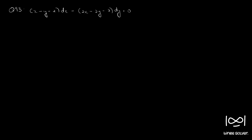Question number 93. We have x minus y minus 2 dx minus 2x minus 2y minus 3 dy equal to 0. Rearranging the terms, we can write dy by dx is equal to x minus y minus 2 by 2x minus 2y minus 3.